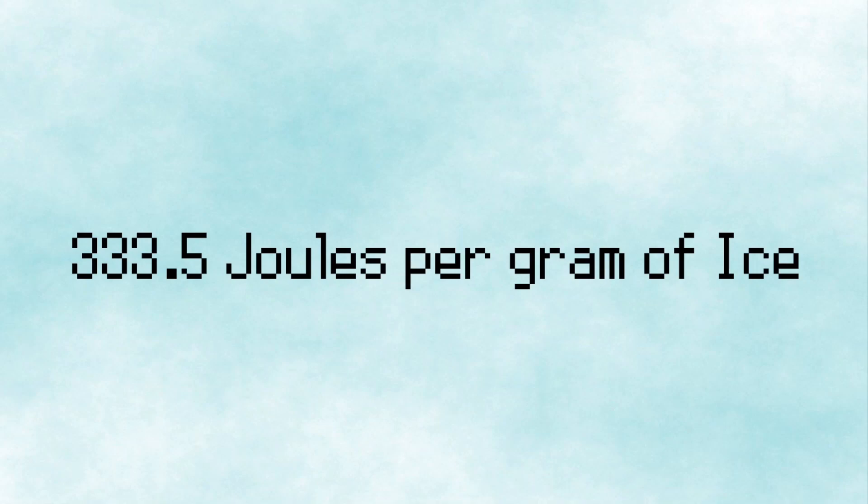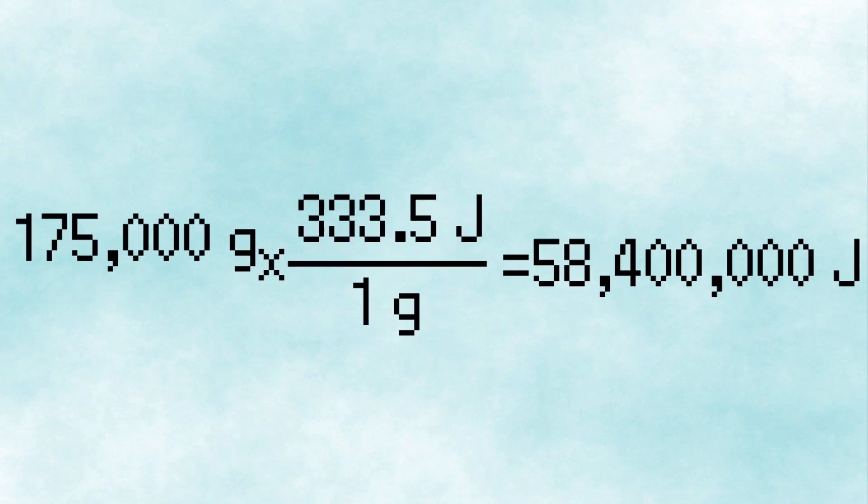If it takes this much heat for 1 gram of ice to melt, then for 175,000 grams, it takes about 58.4 million joules of heat.